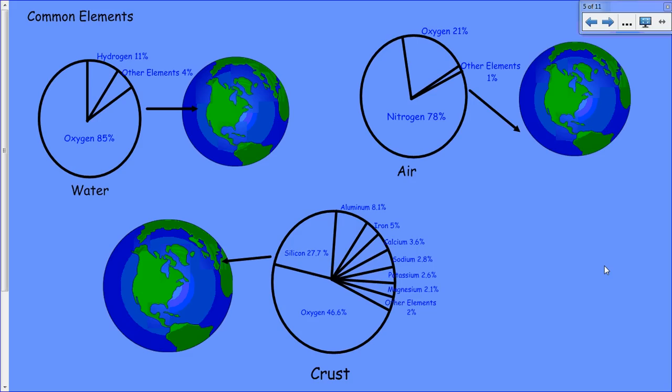There are many different kinds of elements that can be found in and on our Earth. If we're looking at water of Earth, it is mostly made up of oxygen but also contains hydrogen and other elements. If we're looking at the air that surrounds our Earth, we can see that most of it is made up of nitrogen with oxygen and other elements.